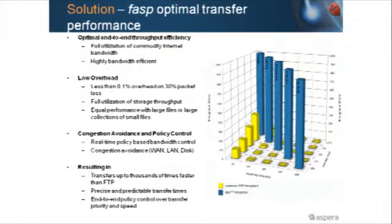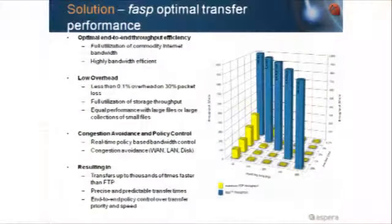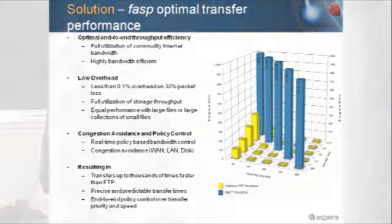This is where Aspera comes in. Aspera's product is called FASP — it's essentially a patented protocol that lets you move big data over your wide area network, and you get the most of your bandwidth because it makes up for where TCP fails. You can see from the graph that with Aspera, you get your full bandwidth usage from starting with the LAN all the way out to satellite. There's really low overhead and it makes up for all the congestion problems that are inherent in the technology.